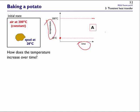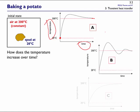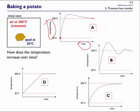Pause the video, have a think about that, and sketch the curve. Here are some possibilities. Maybe it overshoots the final temperature, maybe it overshoots and oscillates like a lightly damped system, maybe it's asymptotic like in C, or maybe it rises linearly and then stops when it gets to 200°C, like in D.